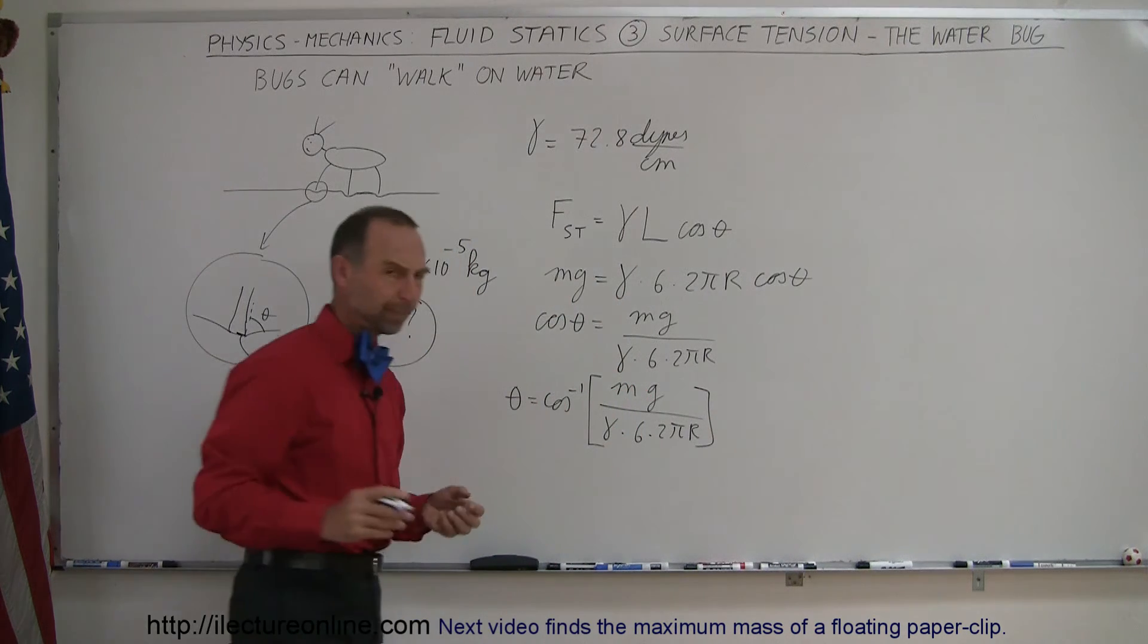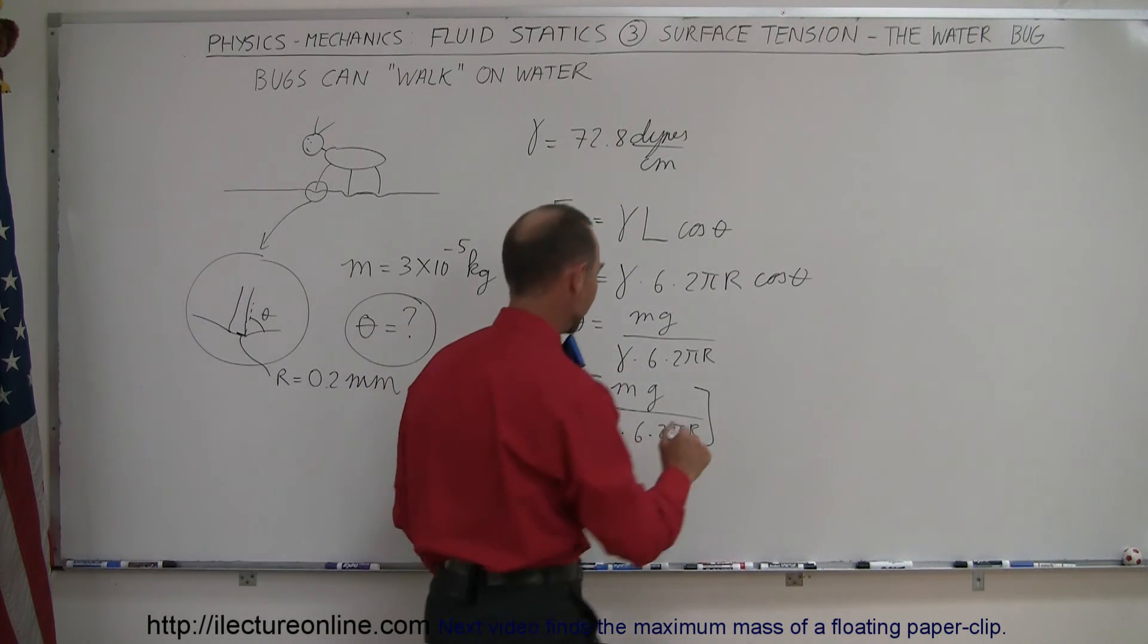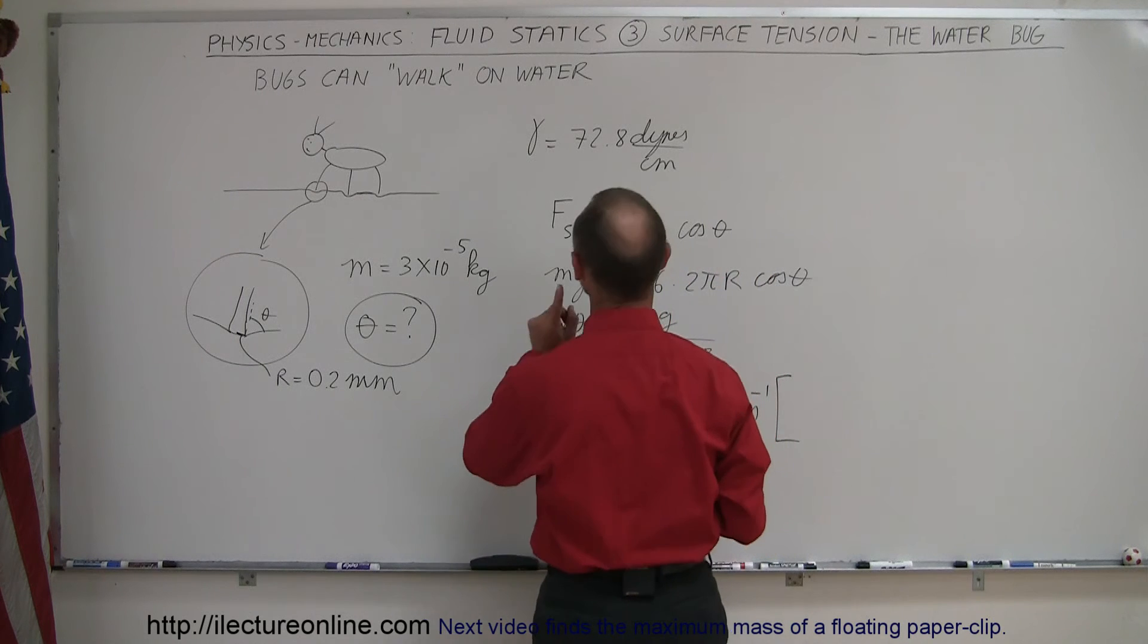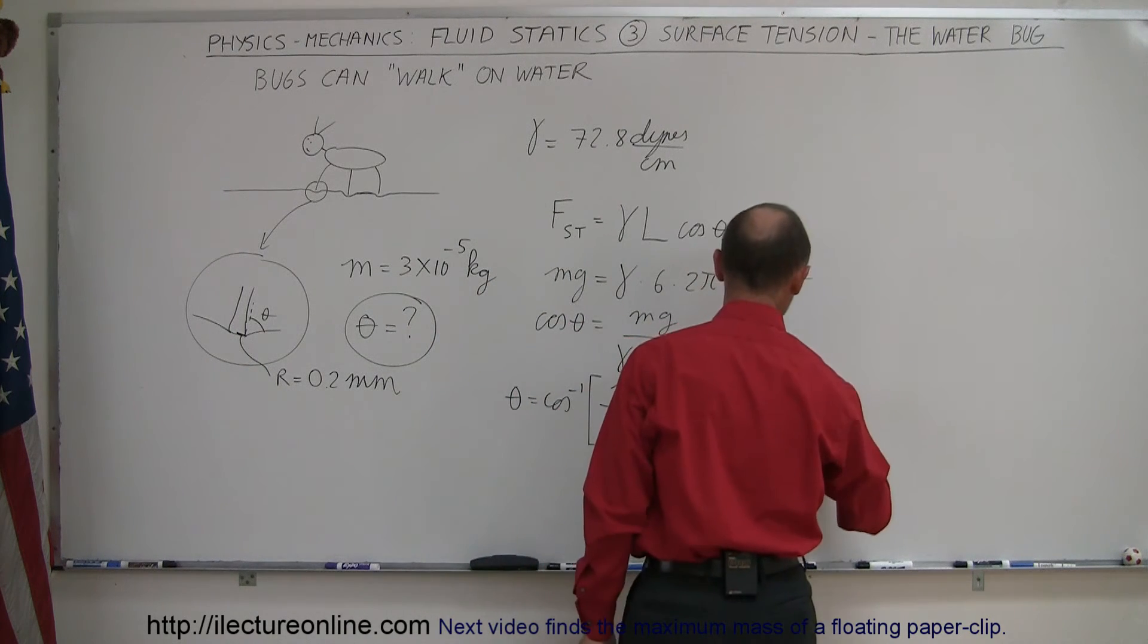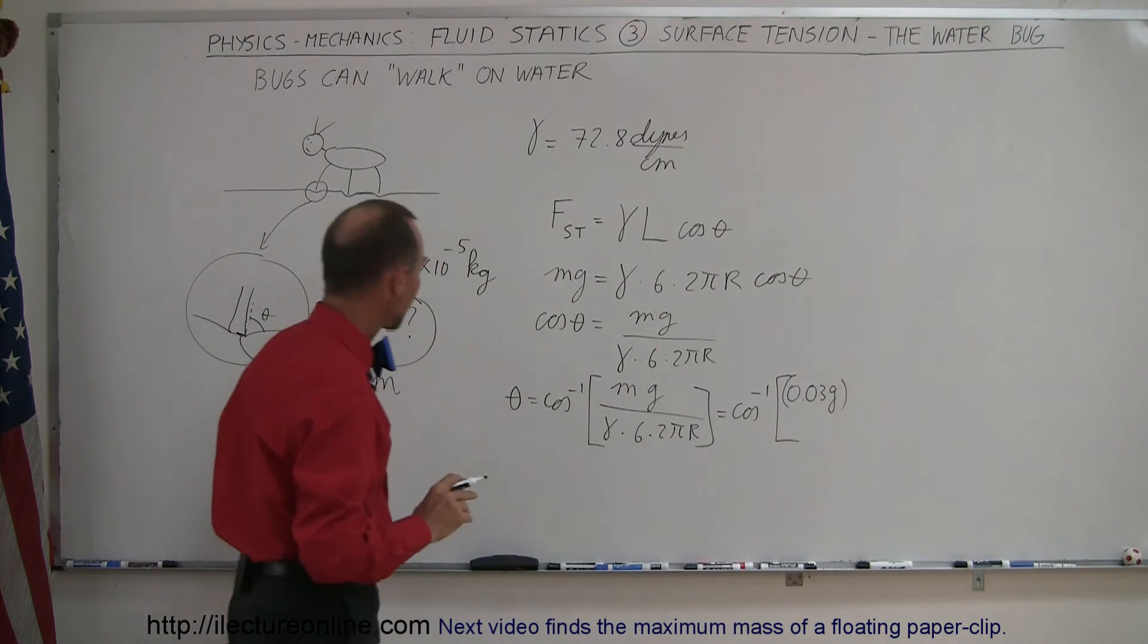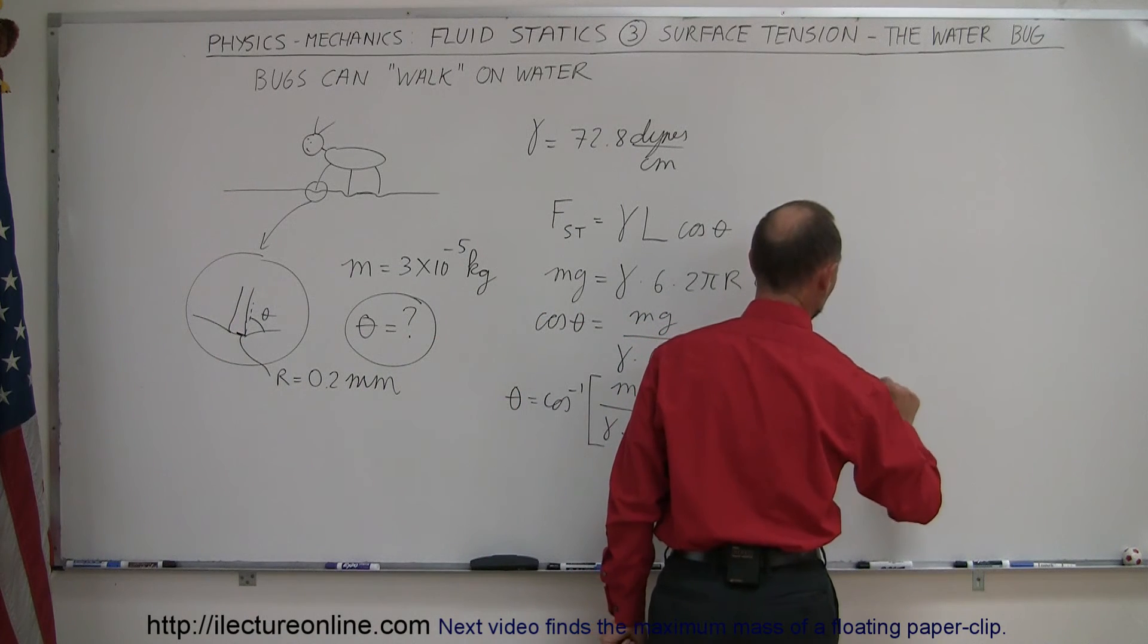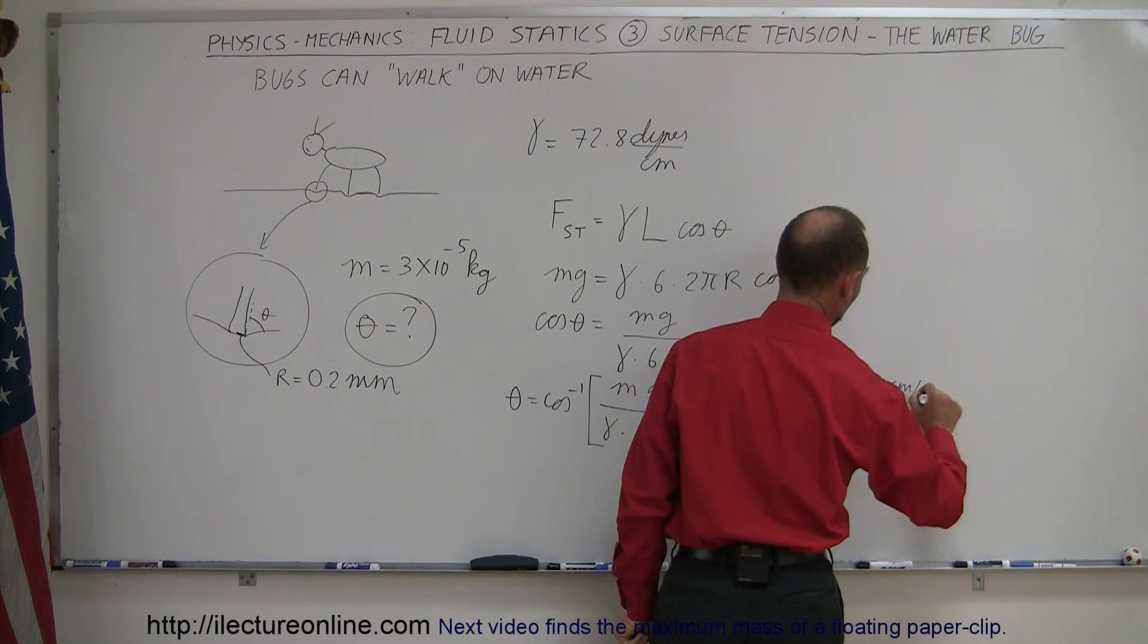Alright, let's see if this bug can float. This is equal to the arccosine of the mass which we said was this many kilograms converted up to grams. So it would be 0.03 grams. So now we're in the CGS system. The g then would be 980 centimeters per second squared.